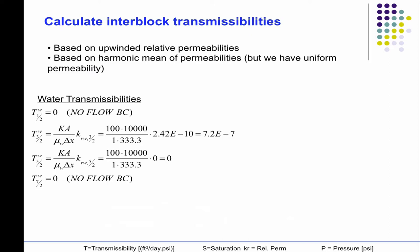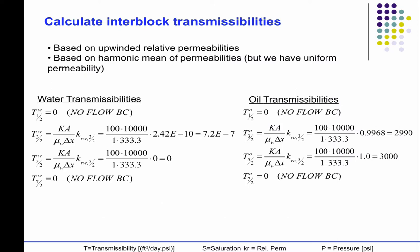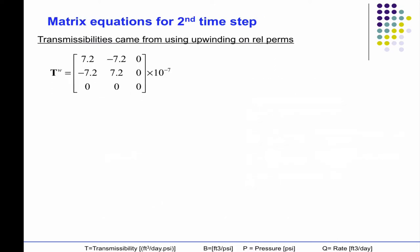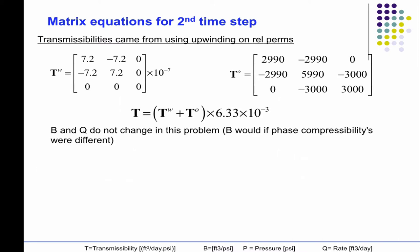Now that you have upwinded relative permeabilities, even though everything was homogeneous to begin with, now you sort of have heterogeneity because the constituent response has changed. So those are all the terms that go into both the water and the oil transmissibilities. Now you can see where this was zero in the first time step, now it's different. The oil transmissibility, add them together.